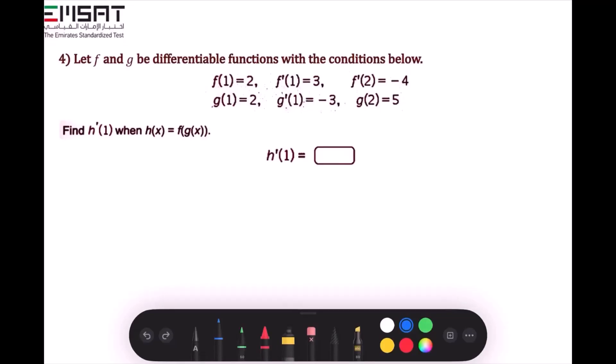Let f and g be differentiable functions with the conditions below. Find derivative of h of 1 when h of x is equal to f brackets g of x. So you have this, and we need to use the chain rule to take the derivative of h of x. So the derivative of h of x, let's write that down.